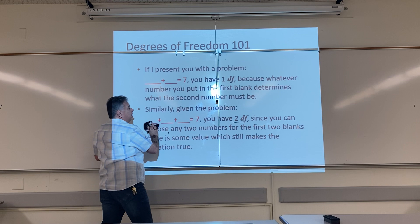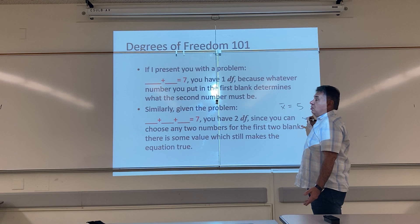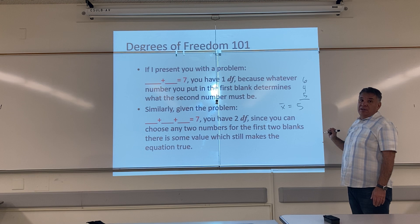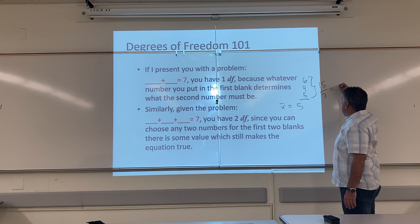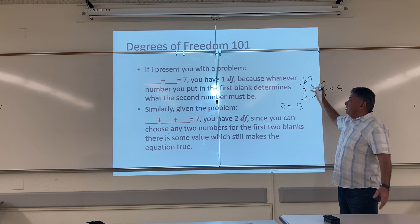That's basically what's happening once you calculate an average. Once I say the average is 5, if the first person is 6 and the second person is 4, what does the third person have to be so that the average stays 5? Well, they can only be 5 — because when I sum it up I get 15, and when I divide by 3 the average is 5. So this first value was free to be anything it wanted, this second was free, but this third is restricted, so I only have two degrees of freedom. Once we use up all our freedom, we become restricted. That's what we mean by degrees of freedom.